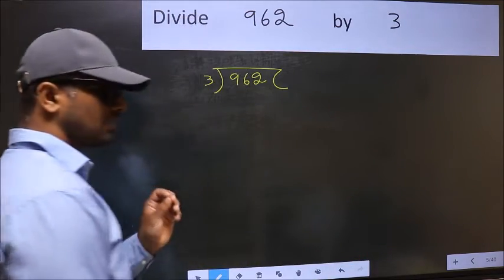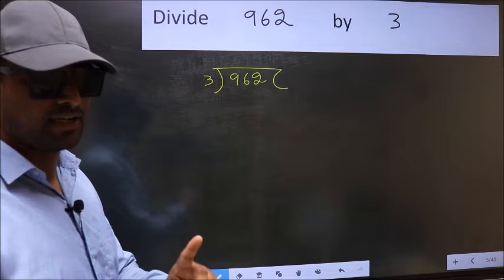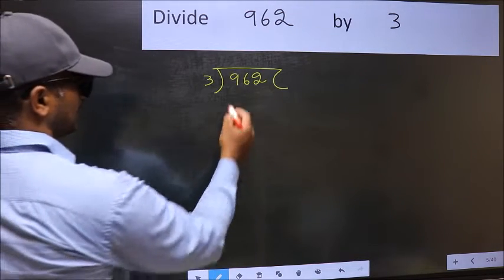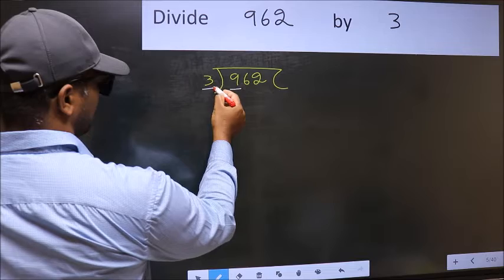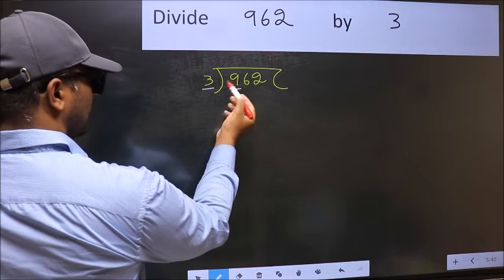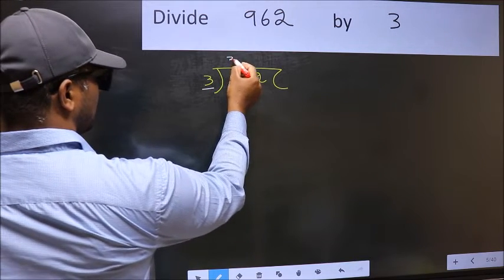This is your step 1. Next here we have 9 and here 3. When do we get 9 in 3 table? 3 times 3 is 9. Now you should subtract 9 minus 9, 0.